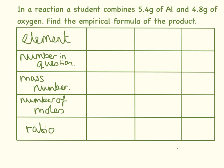In this question a student is combining 5.4 grams of aluminium and 4.8 grams of oxygen — find the empirical formula of the product. This is slightly different because we're talking about grams rather than percentages. In this situation for empirical formulas, unlike every other situation in your GCSE, the units do not matter — we could be talking about percentages, grams, or even number of people.